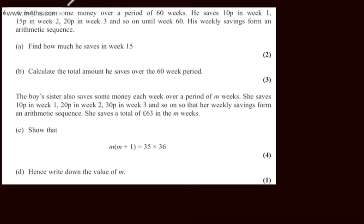In question 6 we're told that a boy saves some money over a period of 60 weeks. He saves 10p in week 1, 15p in week 2, 20p in week 3 and so on until week 60. His weekly savings form an arithmetic sequence.